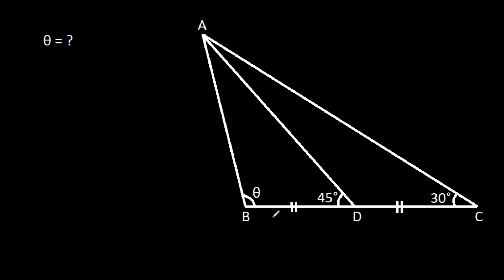In this video, we have been given that BD is equal to CD, angle ADB is 45 degrees, angle ACD is 30 degrees, and angle ABD is theta. We have to find theta.